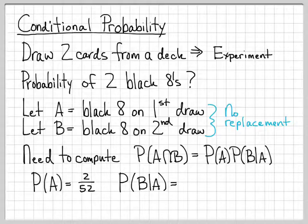And since I've already drawn one black eight out of the deck, there's only one remaining. So this remaining probability is just 1 over 51. I have one chance out of 51 to get a black eight on my second draw.